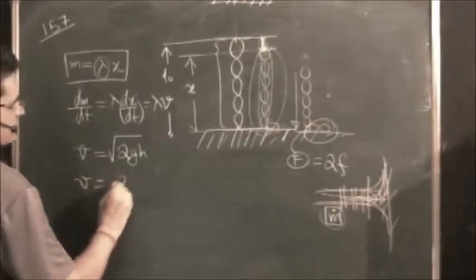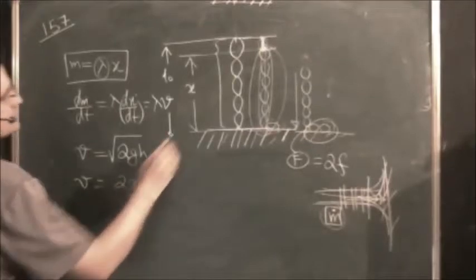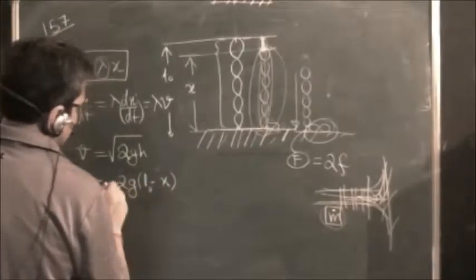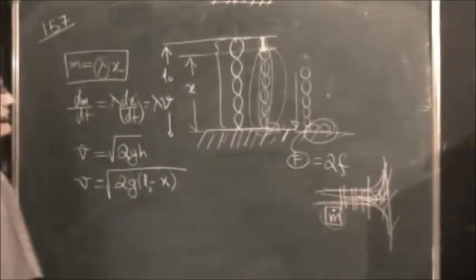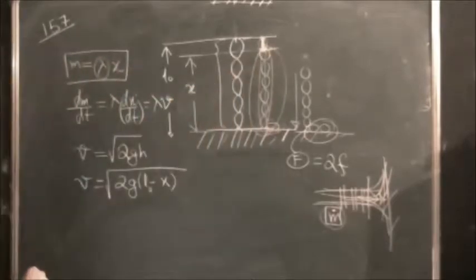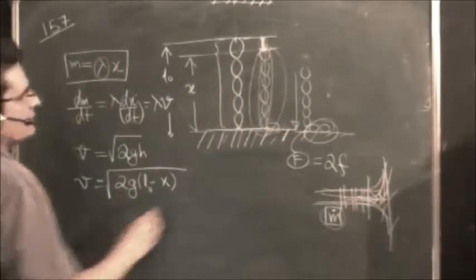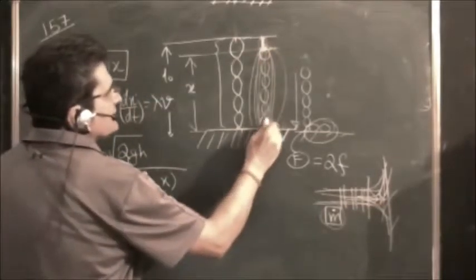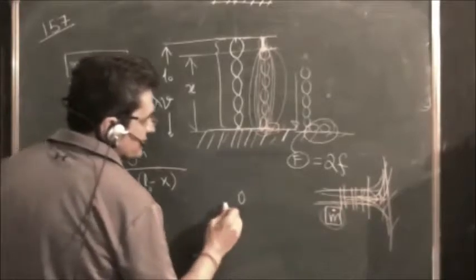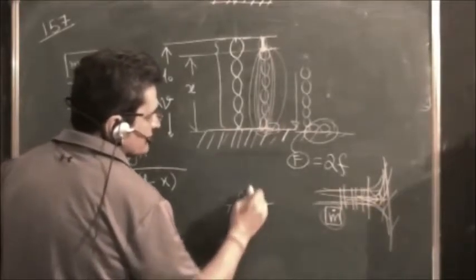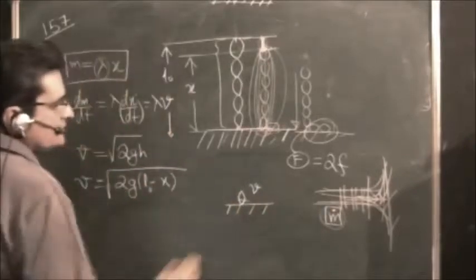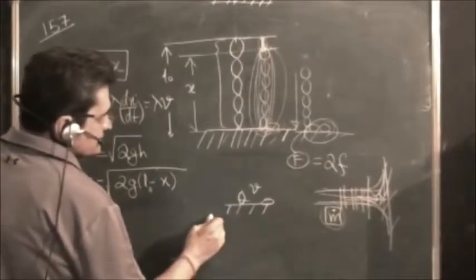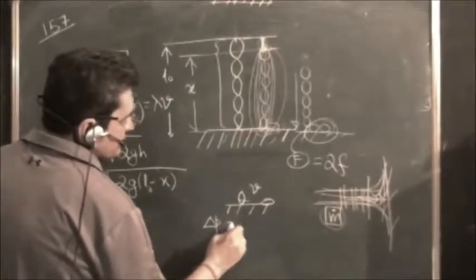So here the velocity would be equal to root 2g, where h is how much? It is L₀ minus X under root. This is the velocity at any instant X. Now this velocity of the chain is same for the whole part of the chain, so it means the mass which is striking the table also has this velocity.